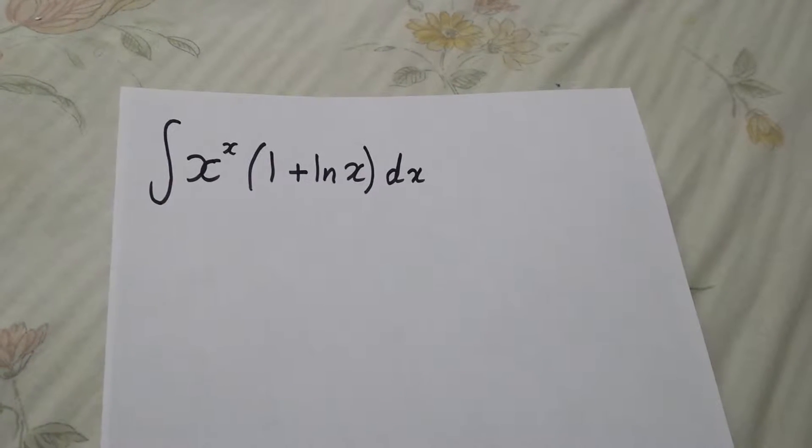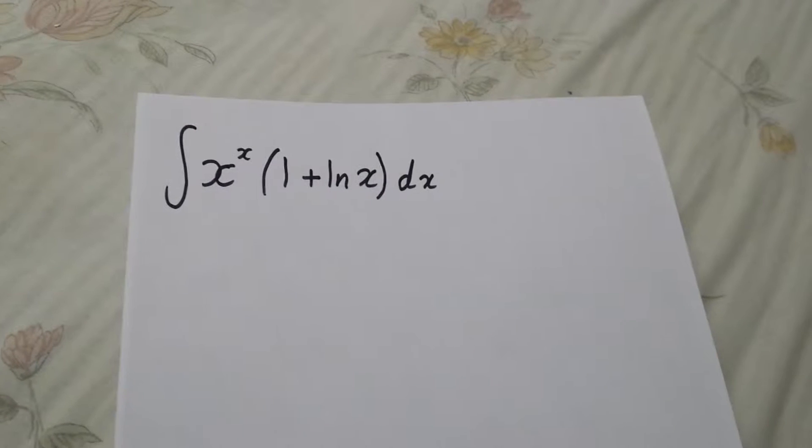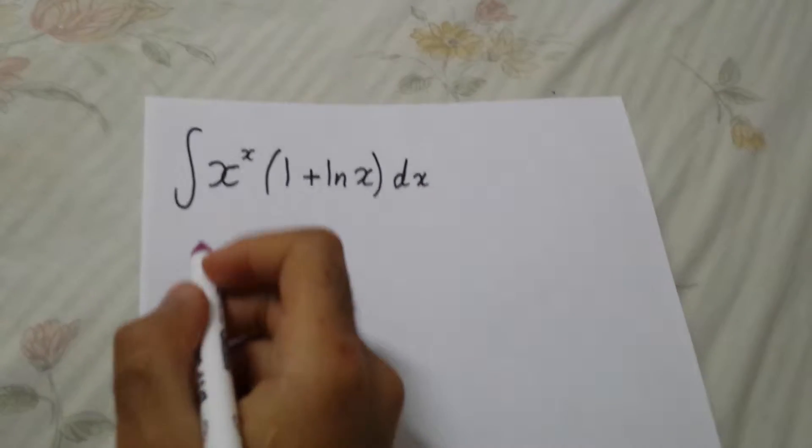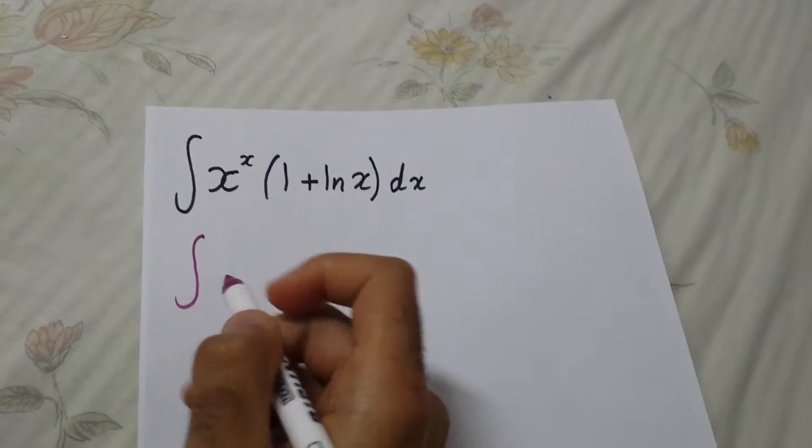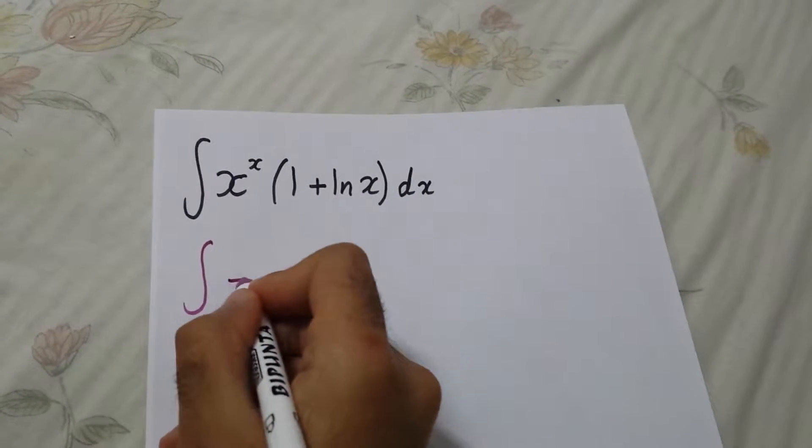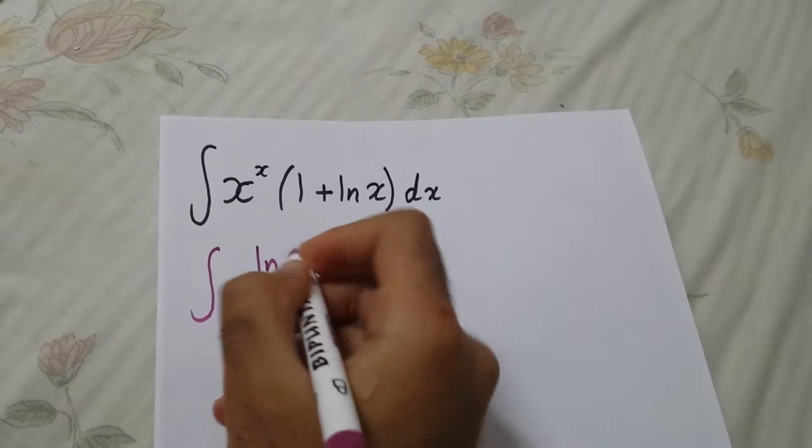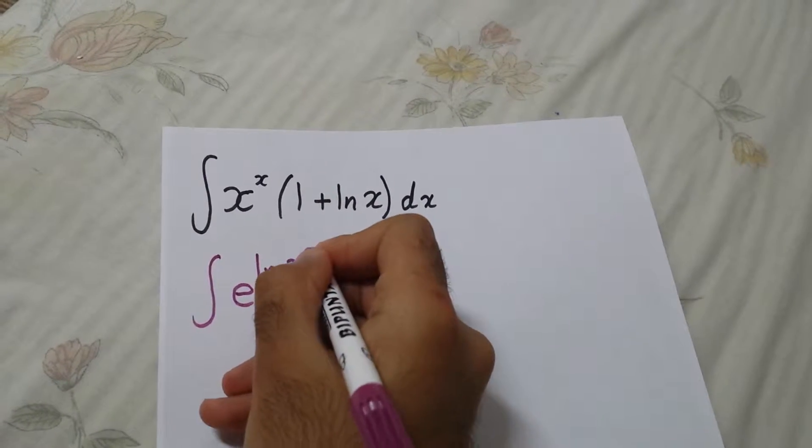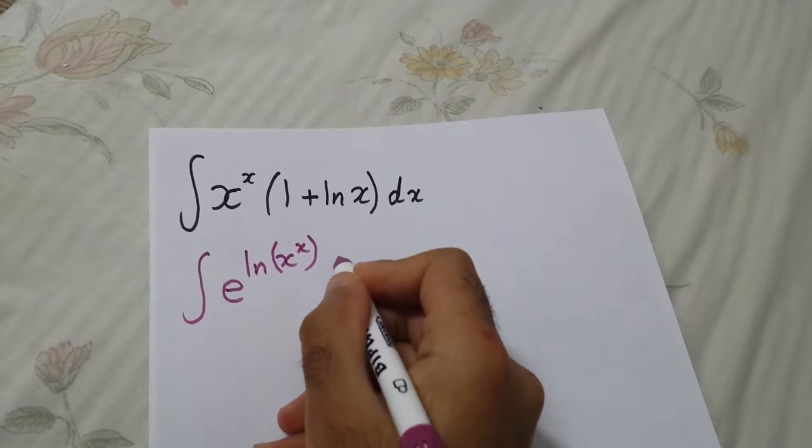The integral of x to the power x times 1 plus ln x. First we will rewrite the integral as x to the x, which we will write as e to the ln x to the x, and we will keep 1 plus ln x dx.